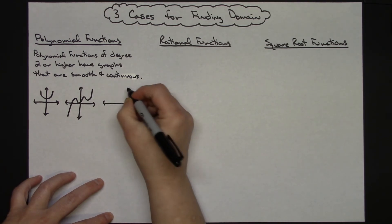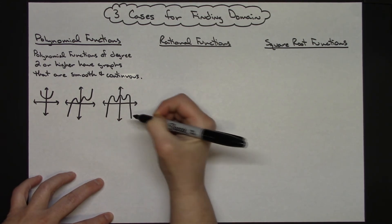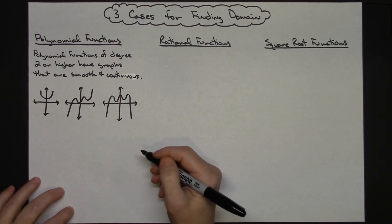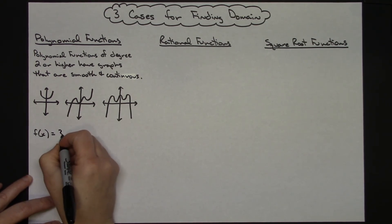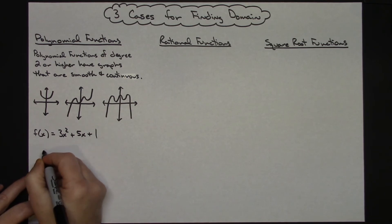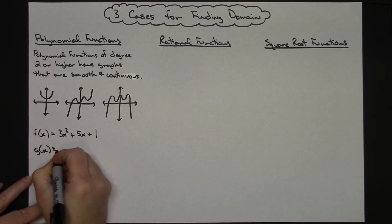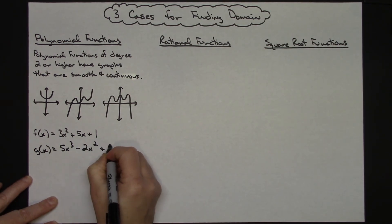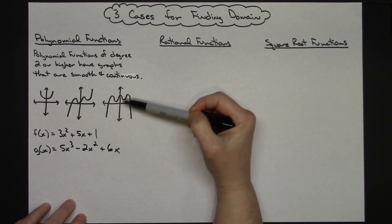The leading coefficient would be positive with lots of hills and valleys. I could even have it be a negative leading coefficient, even degree — might look something along those lines. Those are basically what your polynomial functions look like from a graphing standpoint. Algebraically, I might have something like f of x equals 3x squared plus 5x plus 1, or g of x equals 5x cubed minus 2x squared plus 6x.